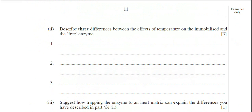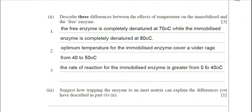Typing in the answers for part two: first, the free enzyme is completely denatured at 70°C while the immobilised enzyme is completely denatured at 80°C — always quote temperature values from the graph. Second, the optimum temperature for the immobilised enzyme covers a wider range, from 40 to 50°C. Third, the rate of reaction for the immobilised enzyme is greater from 0 to 40°C. Those are three clear differences between the two types of enzyme with regard to temperature.